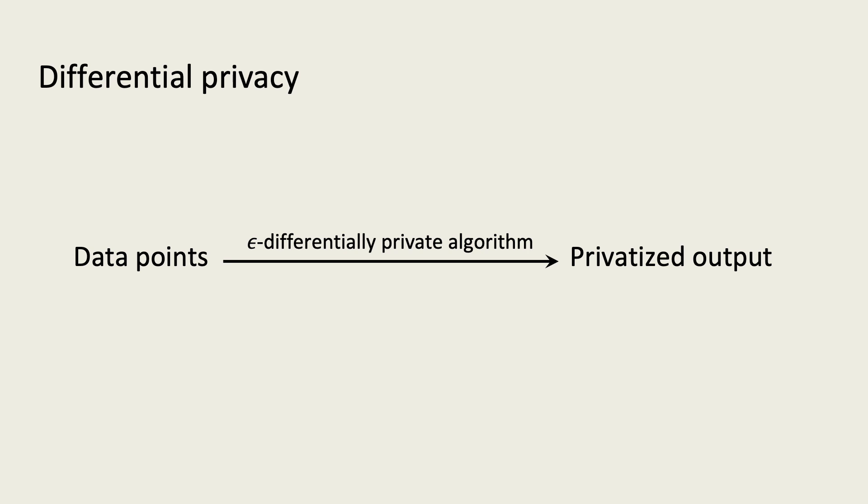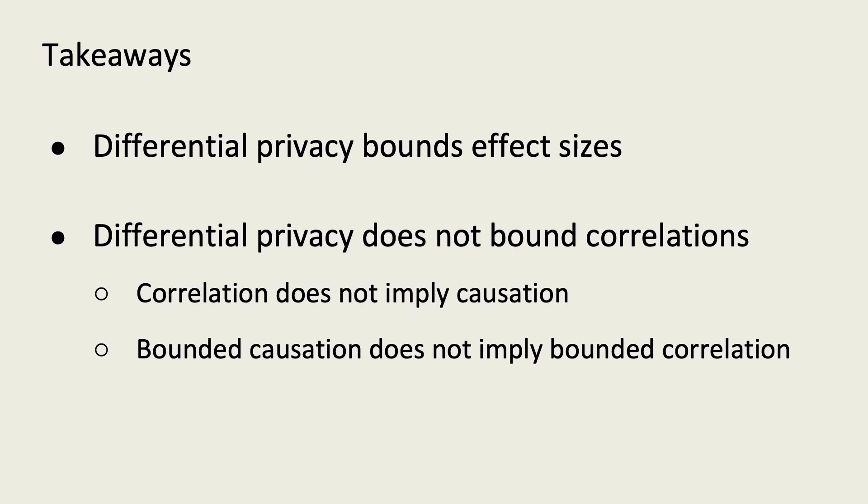Recall that differential privacy is a formal property that an algorithm can have. It is designed to protect the privacy of people providing the algorithm with data points. The main result of our paper is to prove that differential privacy bounds the effect size of a person's data point on the output of the algorithm.